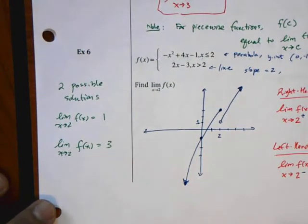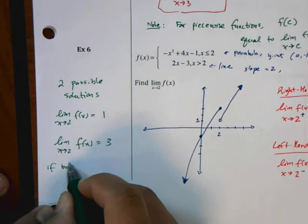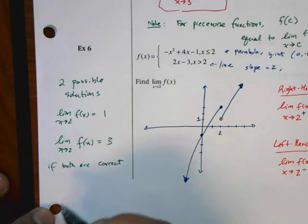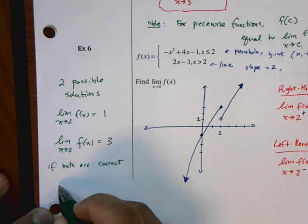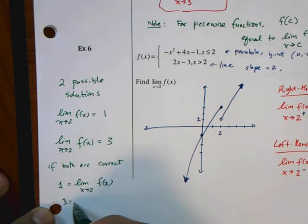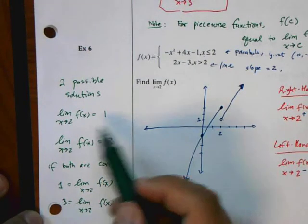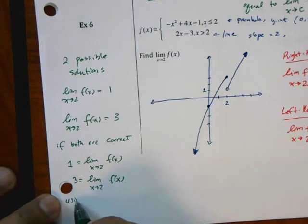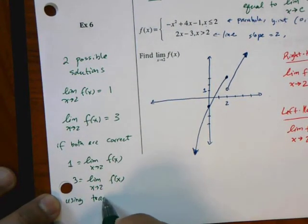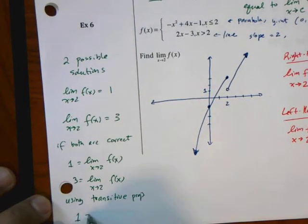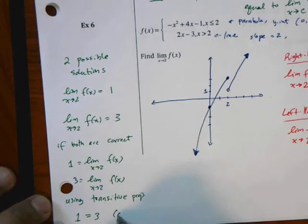Well, if they are both correct, then we can say that 1 is equal to the limit as x approaches 2 of f(x). So all I'm doing is reversing this order and using the transitive property. You should look this up if you don't remember it. Using the transitive property, we get 1 equals 3, which is a contradiction.